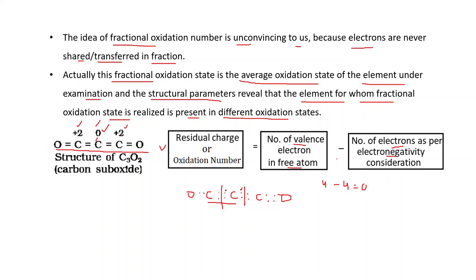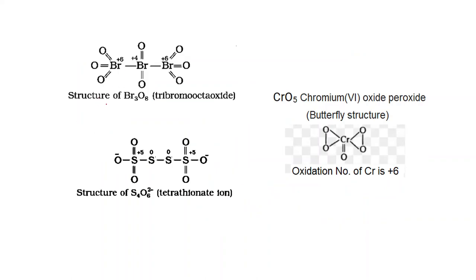Now for the side carbon atoms: there is a double bond between carbon and oxygen. Since oxygen is more electronegative, both electrons of that double bond are assigned to oxygen. So the side carbon gets 0 electrons from the C=O bond. Applying the formula: 4 (valence electrons) minus 2 (electrons retained from C–C bond) = +2. So the oxidation number of each side carbon is +2, consistent with the average of 4/3.